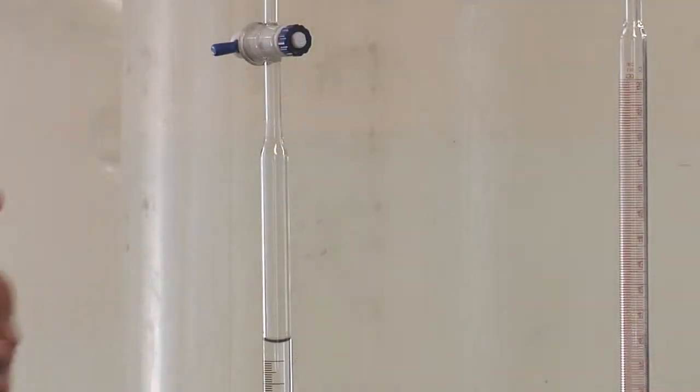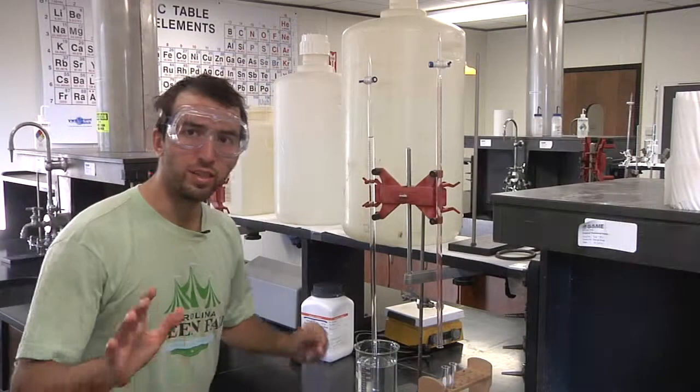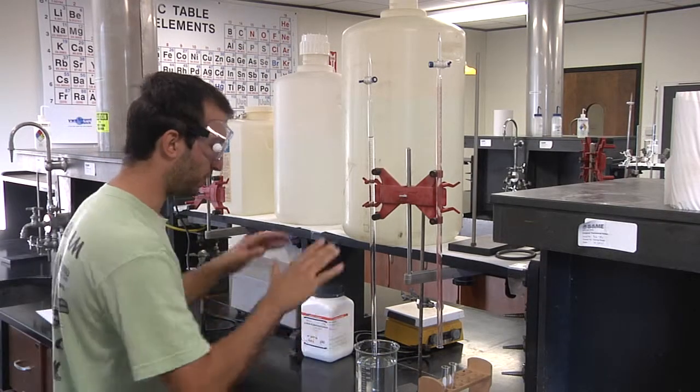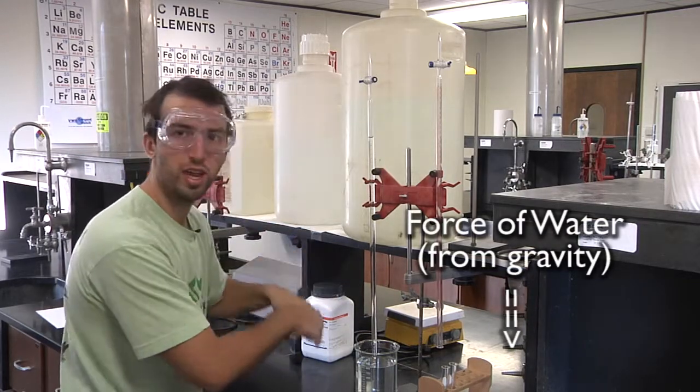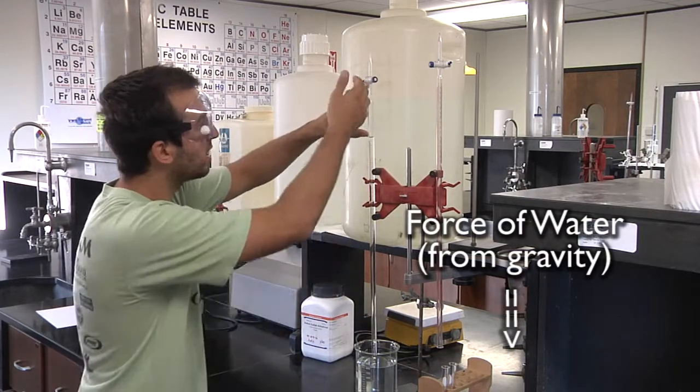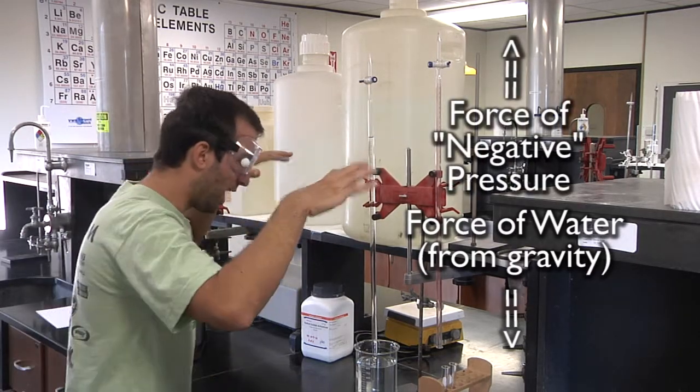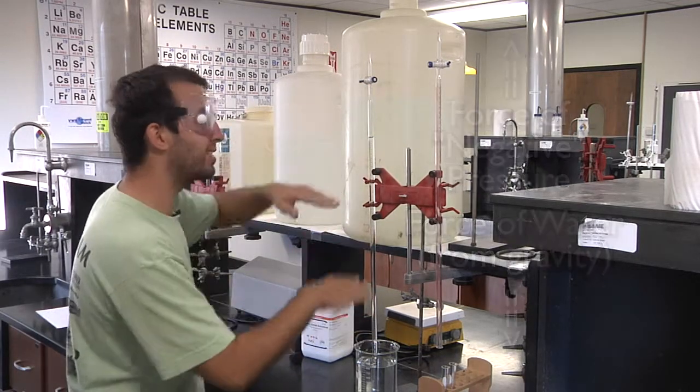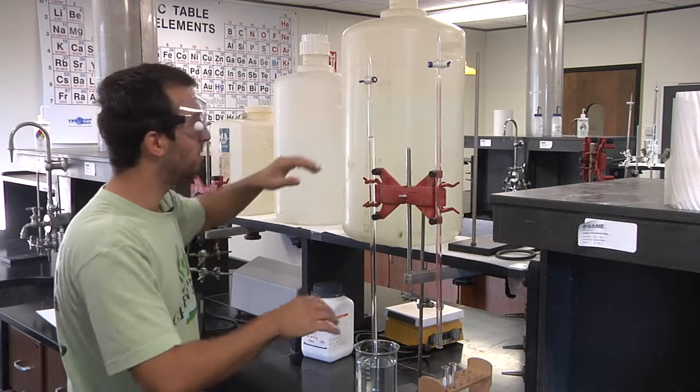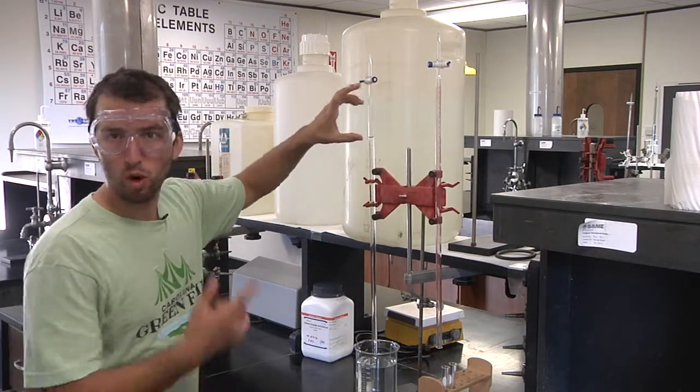Now, why won't the water fall out of the burette? This answer might be a little complicated, but if you think about it, the water is putting pressure downwards, which is creating a negative pressure in here. Atmospheric pressure will work against that pressure to balance out, and that's why the water doesn't flow.